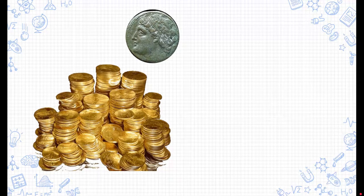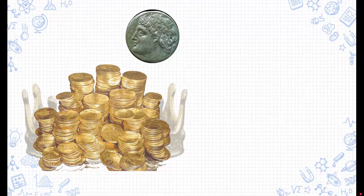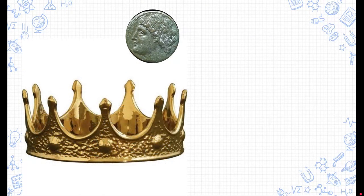The story goes that King Hiero decided he wanted to fashion a crown. So he grabbed a lump sum of gold and gave it to a blacksmith, and that blacksmith supposedly turned it into a beautiful-looking crown for King Hiero.